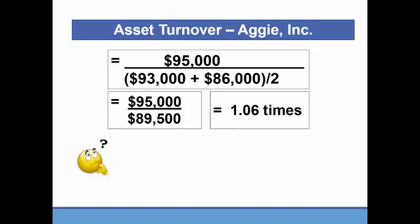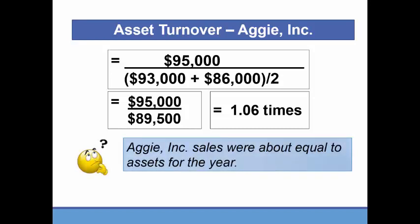From this, we would say that Aggie's sales were about equal to its assets for the year. If this ratio had been 2 times, Aggie's sales would have been twice its assets. If it had been 0.5, sales would have been half of its assets.